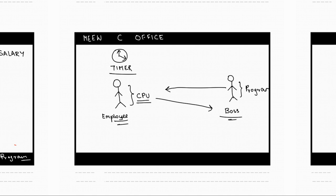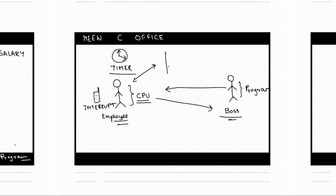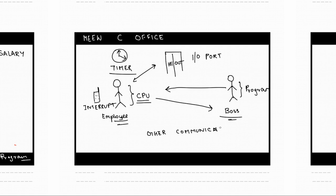Normally a CPU executes all the instructions the program gives in sequence from start to finish. However, the program can call the CPU and ask it to interrupt this sequence of instructions and follow some other instructions instead — this call to interrupt a sequence of instructions is called an interrupt. The CPU can also communicate with the outside world through certain channels; one such channel is called an input-output port, through which data can come in or go out.